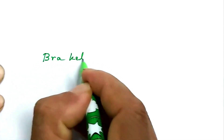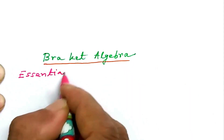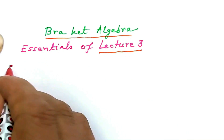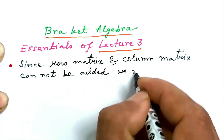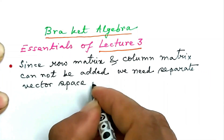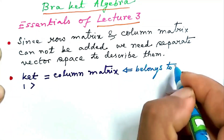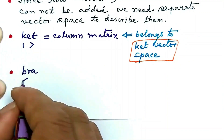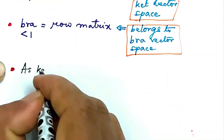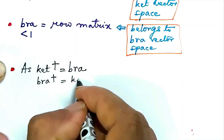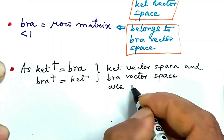We are on to the fourth lecture in the lecture series entitled 'Bracket Algebra.' The essentials of the previous lecture are as follows: since a row matrix and column matrix cannot be added, they are not on the same footing, and so we need separate spaces to describe them. Ket is a column matrix that belongs to what we call ket vector space. Bra is a row matrix that belongs to what we call bra vector space. As ket dagger is bra and bra dagger is ket, it follows that ket vector space and bra vector space are dual spaces.